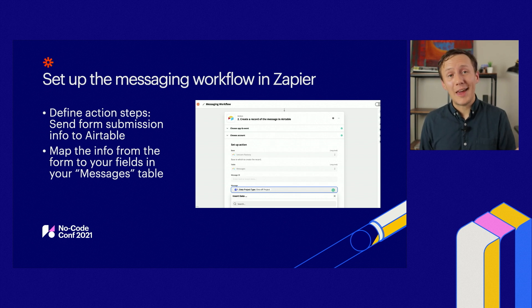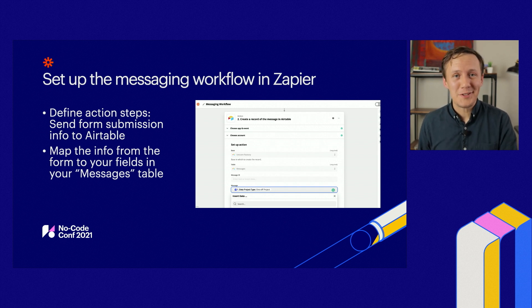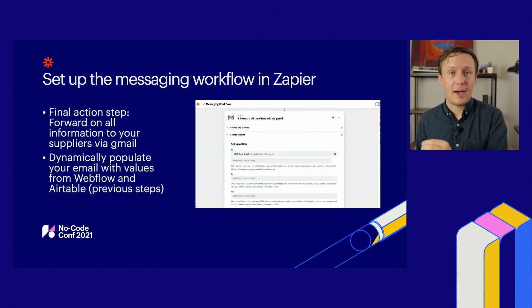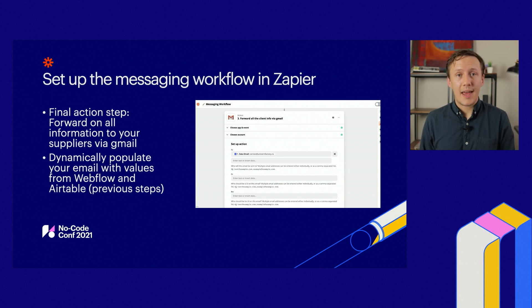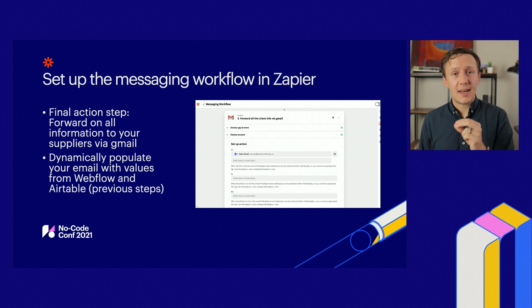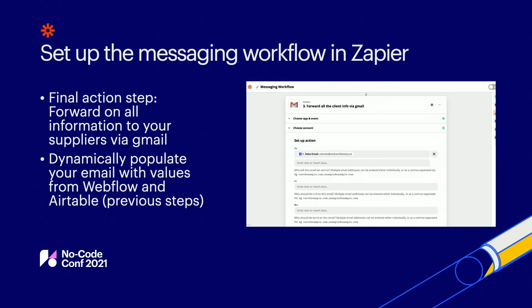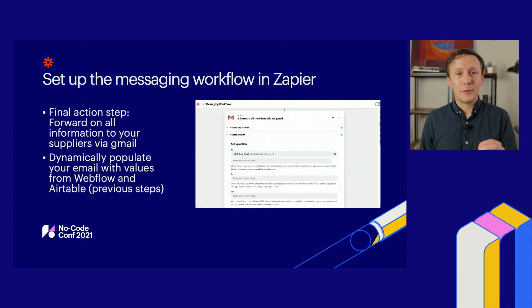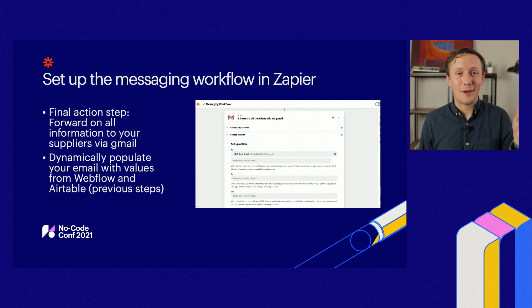Once you've sent that information to Airtable, move on to the next action step — automatically forwarding all the information the client submitted to the freelancer by email. Jump into Zapier and create an action step to send an email via Gmail. Connect your Gmail account and dynamically populate the fields with information from previous steps — for example, dynamically populate the 'to' field with the freelancer's email address and make the sender the client that submitted the contact form. You can also write an email body populated with dynamic content from the contact form.